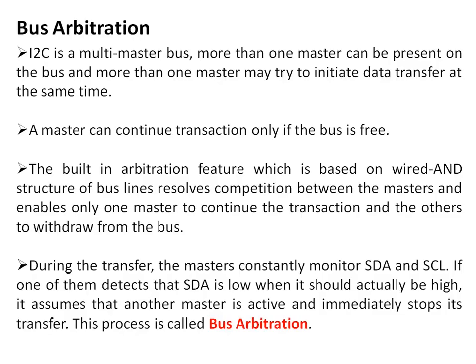I2C is a multi-master bus, so more than one master can be present and more than one master may try to initiate data transfer at the same time. This is handled using bus arbitration. A master can continue a transaction only if the bus is free. The built-in arbitration feature, based on the wired-AND structure of the bus line, resolves competition between masters — enabling only one master to continue the transaction. The device sending logic zero wins the arbitration and gains the bus; the other master detects this and withdraws. During transfer, the master continuously monitors SDA and SCL lines — if it detects SDA is low when it should be high, it assumes another master is active and immediately stops.